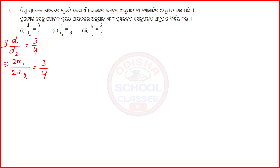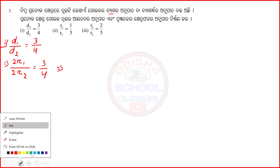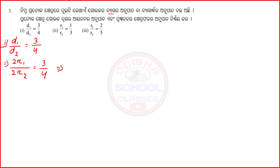Summon 3 by 4. It implies that 2, 2 is already cut. 2, 2 is cut. It implies that R1 by R2 = 3 by 4.